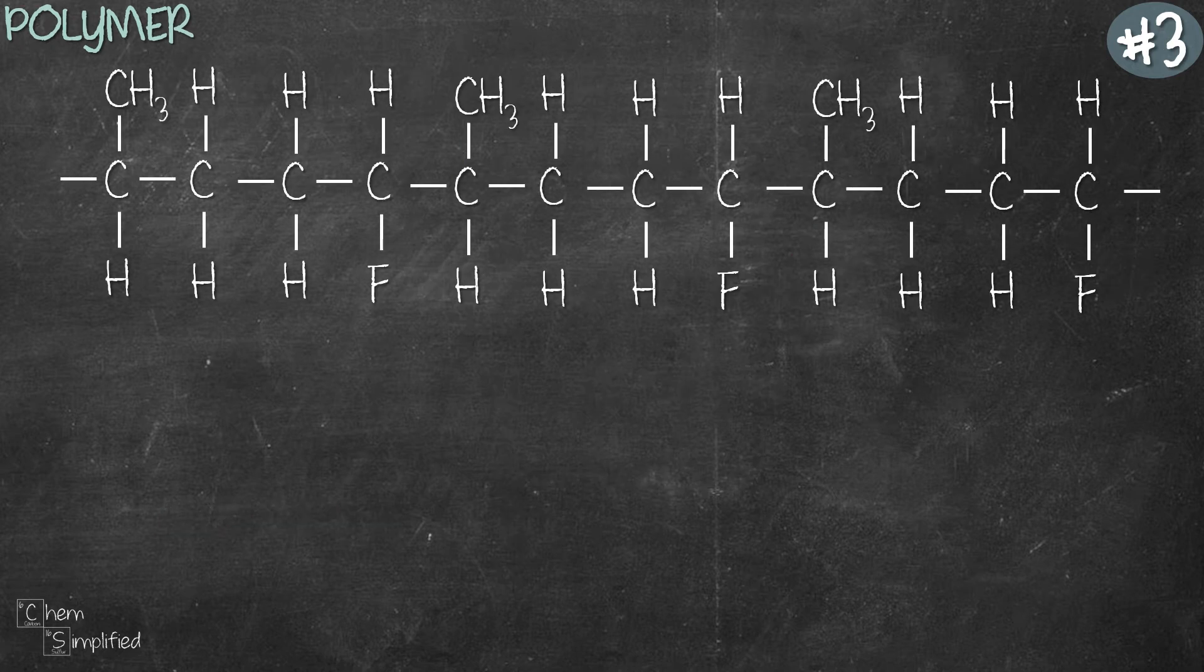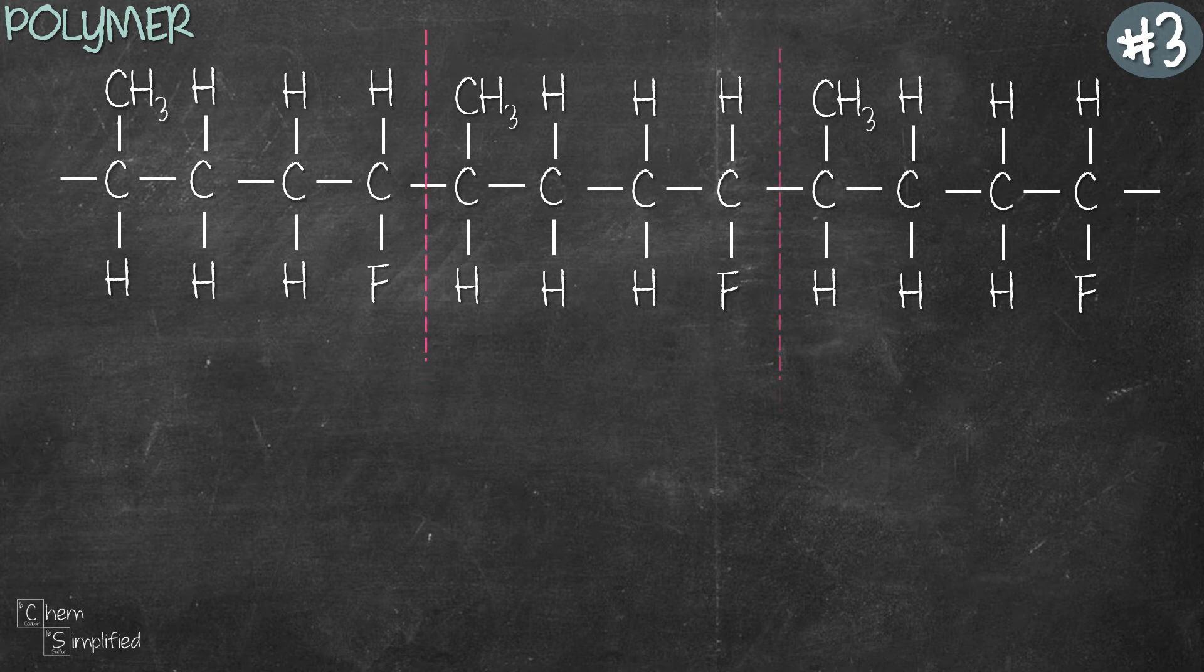For our final example, let's try something different. Look at this polymer. First thing first, look for the repeating pattern. Here we go. Each repeating unit has four carbons.